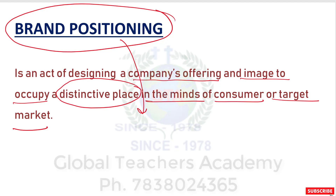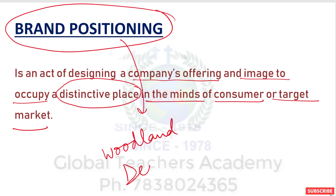Brand positioning is an important key of marketing strategy. Through positioning, the base is created for developing and increasing the required knowledge and perception of customers — we can develop knowledge and perception as well as increase customers. For example, Woodland is positioned as 'tough' and Dettol is positioned as 'anti-infectant.' So by name itself, Woodland is positioned as tough and Dettol is positioned as anti-infectant.